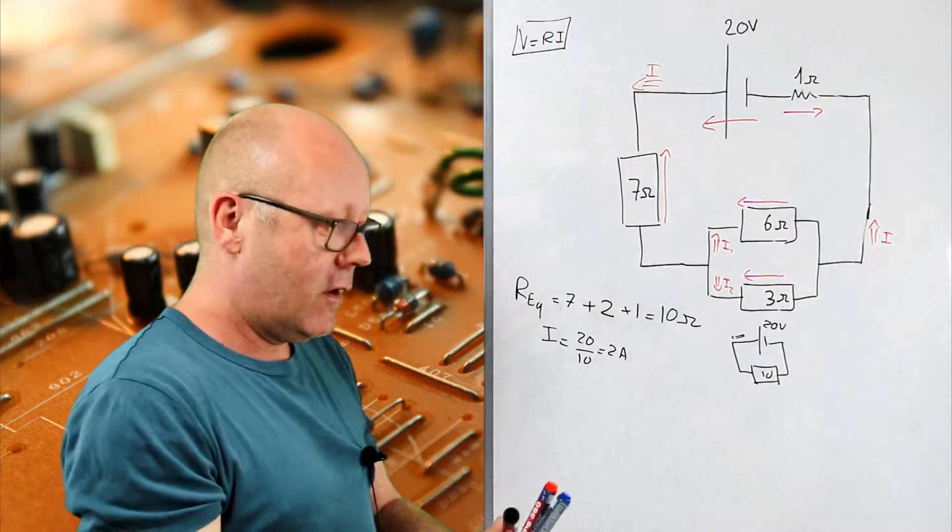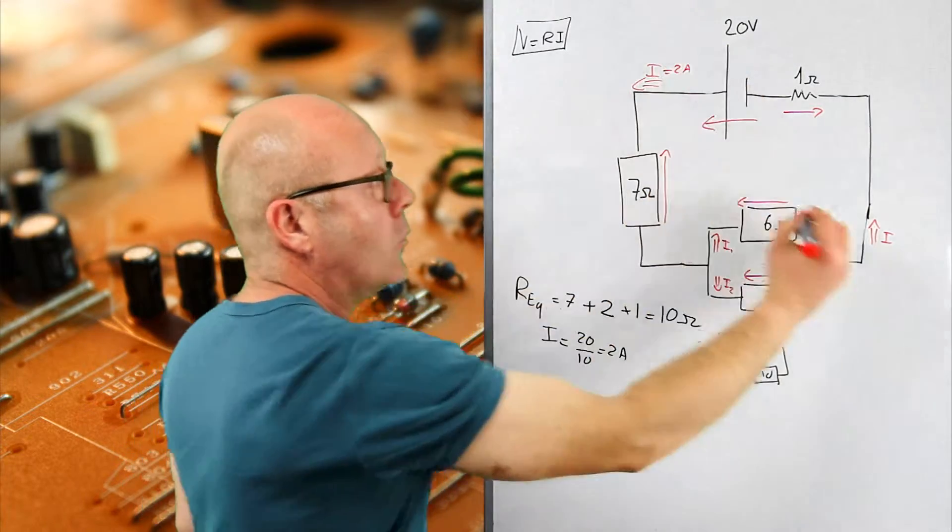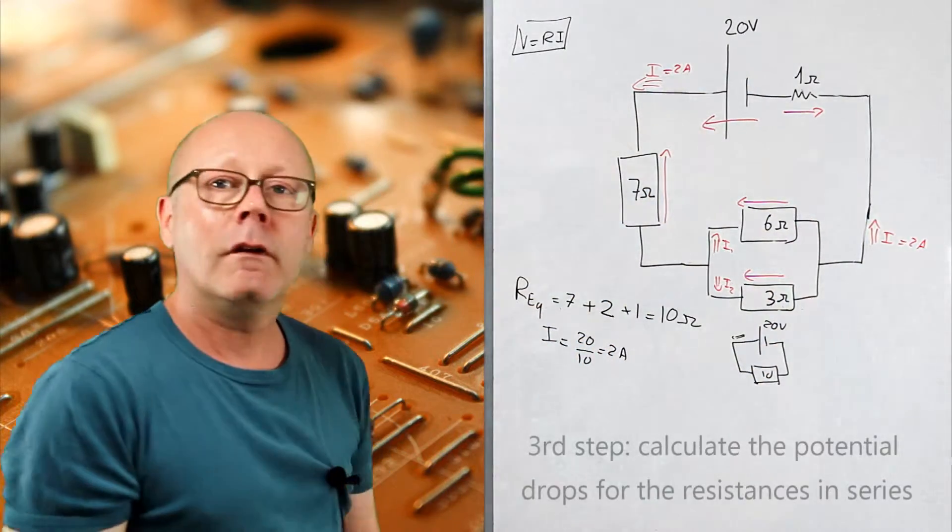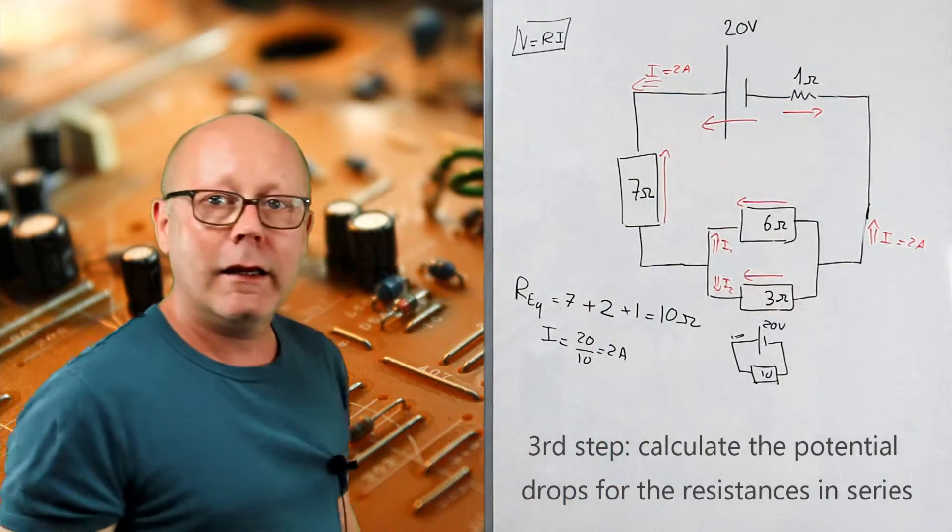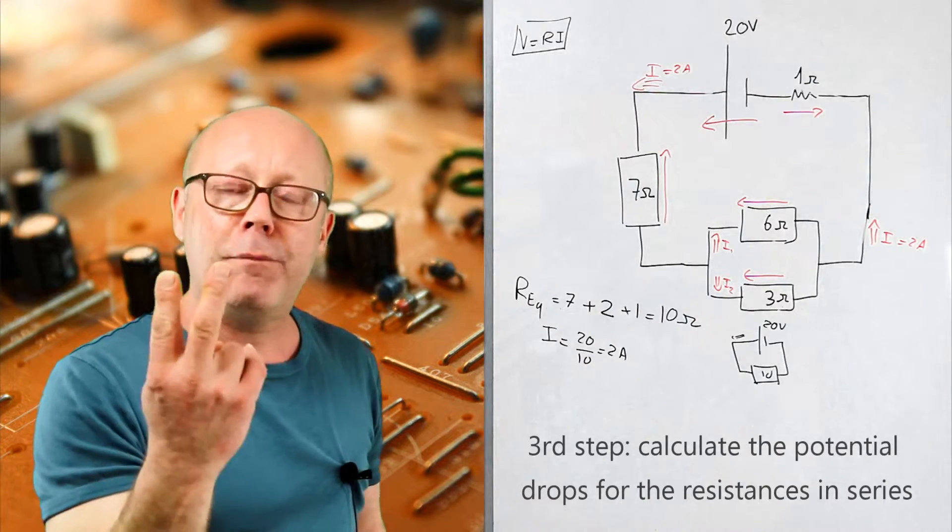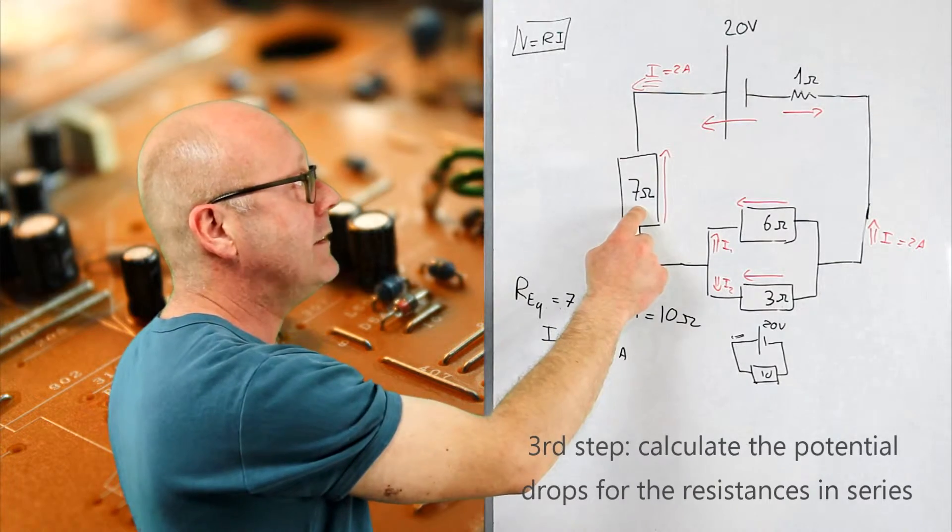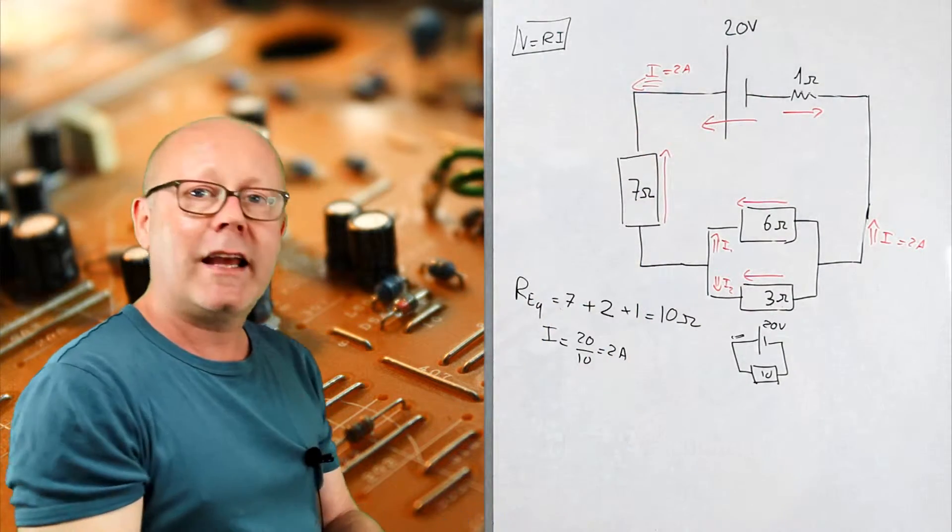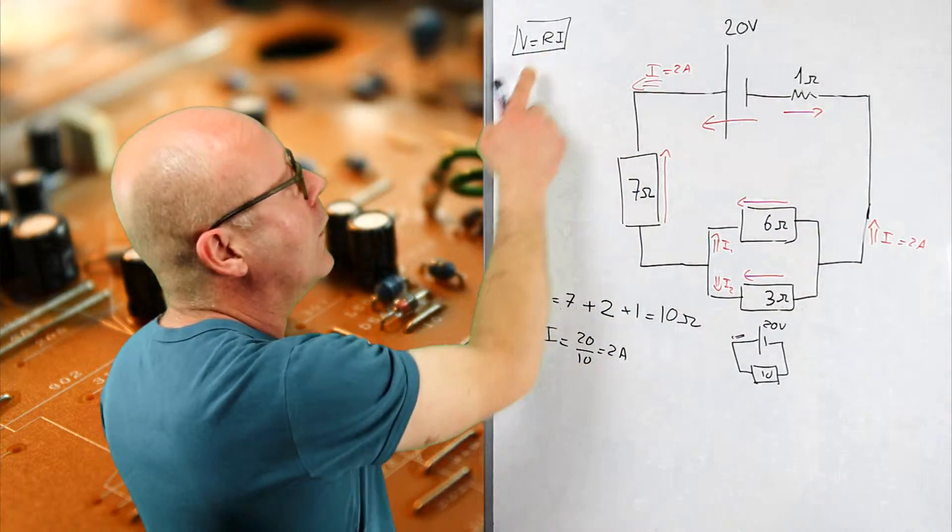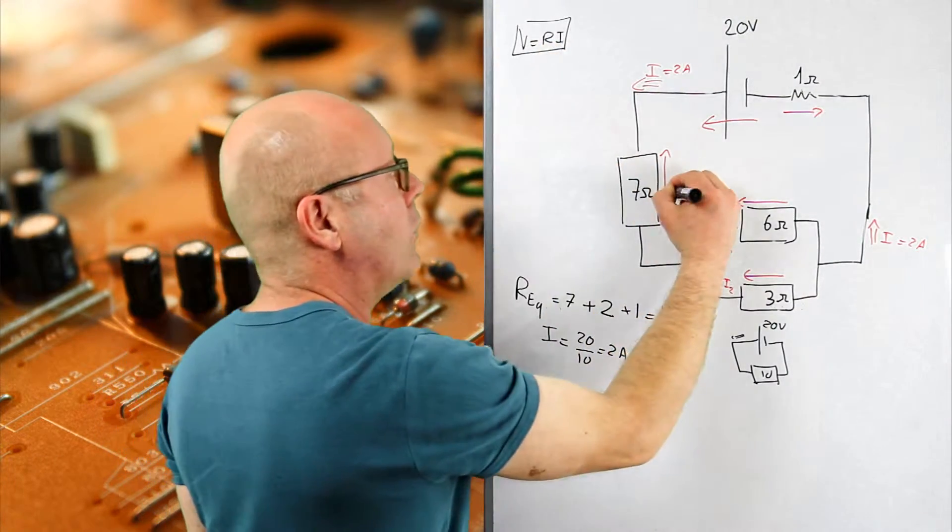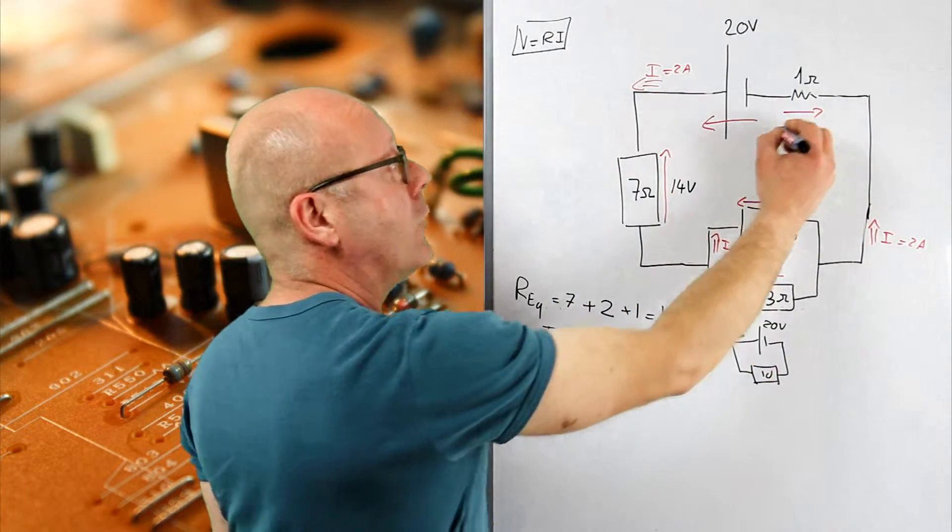Okay, so now I have the main current, the main current that is 2 amps, that I will also have here, 2 amps. We can calculate potential drops in this one and this one. Why? Because out of three parameters we have two. Here we have the resistance and the current, so we can easily find V. The potential drop here which is equal to 2 multiplied by 7, 14 volts, as well as here which is 2 multiplied by 1, 2 volts.